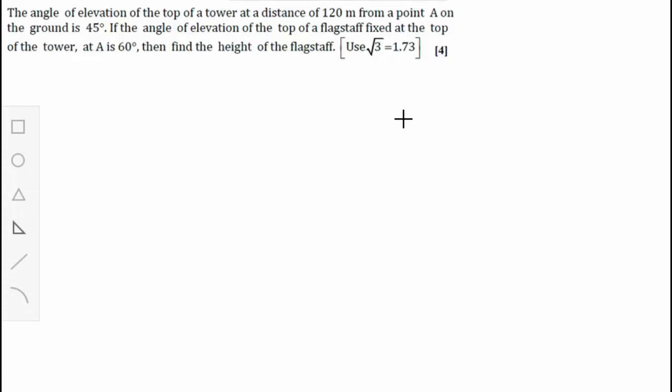There is another question on trigonometry. We will try to understand the question first. The question says the angle of elevation of the top of a tower at a distance of 120 meters from a point A on the ground is 45 degrees. So top of the tower, let AB be the tower.